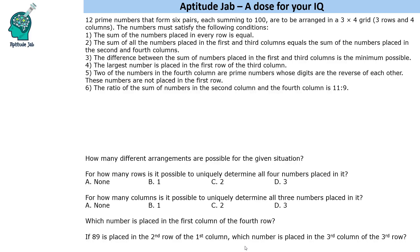Hello everyone, welcome to Aptitude Jab. This set says that 12 prime numbers that form 6 pairs, each summing to 100, are to be arranged in a 3×4 grid — that is 3 rows and 4 columns — and conditions are given to us.